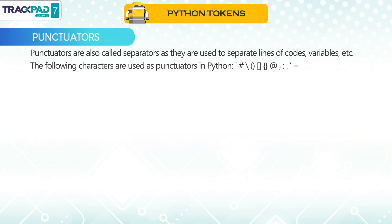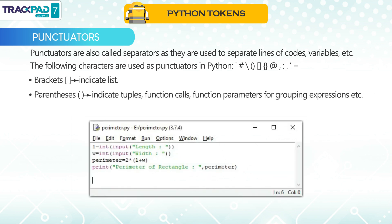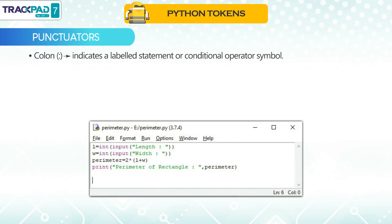Punctuators are also called separators as they are used to separate lines of code, variables, etc. The following characters are used as punctuators in Python: #, /, brackets, parentheses, @, comma, colon, and equal sign. Brackets indicate a list. Parentheses indicate tuples, function calls, function parameters, or grouping of expressions. Comma is used as a separator in a function argument list or variable declaration. Colon indicates a labeled statement or conditional operator symbol. Equal sign is used to initialize the value of a variable.